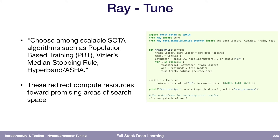Ray, the project mentioned earlier, also has a library called Tune which appears to be written by grad students who implement all the state-of-the-art algorithms because they need to for publishing papers and getting baselines. All of these are implemented in Ray Tune — you've got population-based training and more.